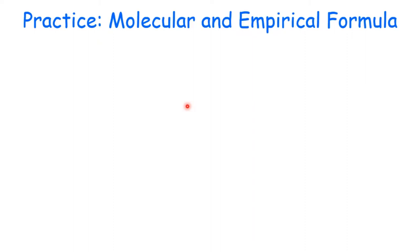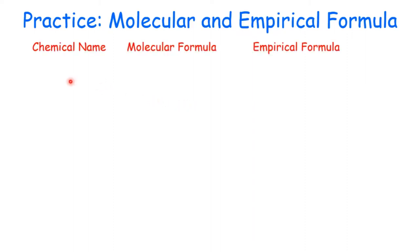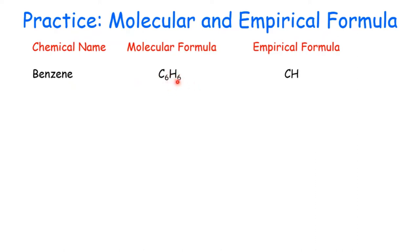Let's work on molecular and empirical formulas. We have a table with the chemical name, the molecular formula, and the empirical formula. Benzene — gasoline contains a low concentration of benzene. It's a very toxic compound. Its molecular formula is C6H6. If you divide the subscripts by 6, you get 1 for carbon and 1 for hydrogen. So CH is the empirical formula for benzene.